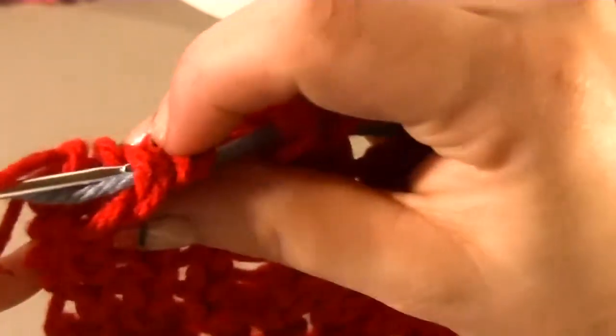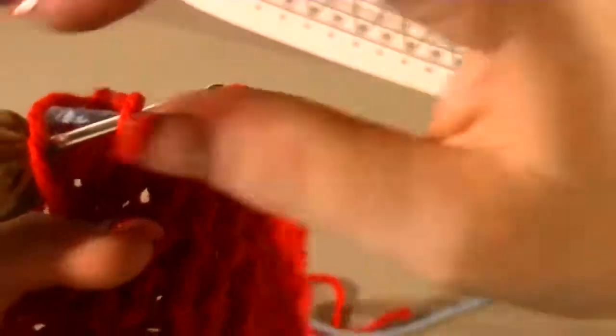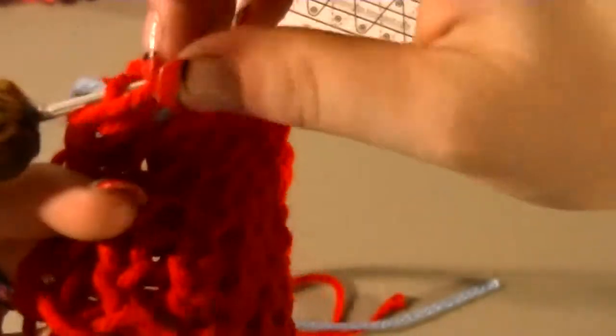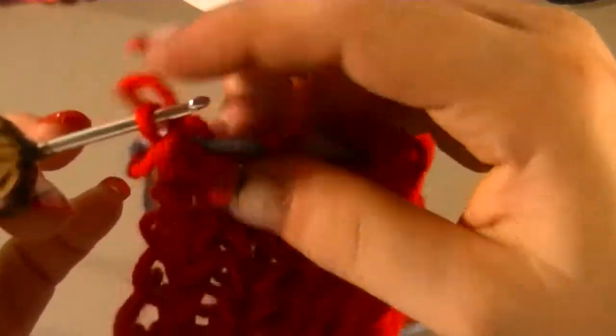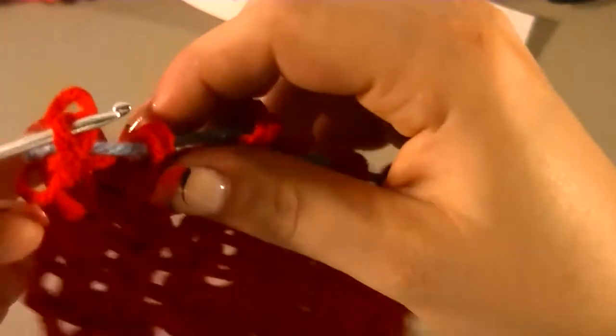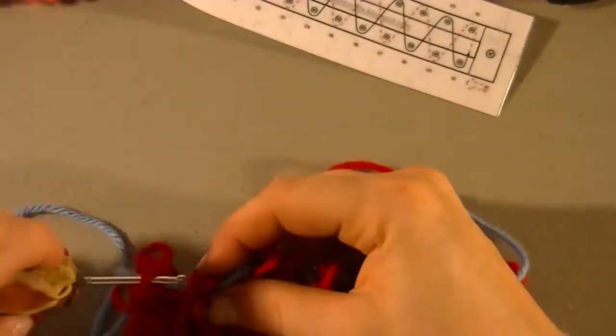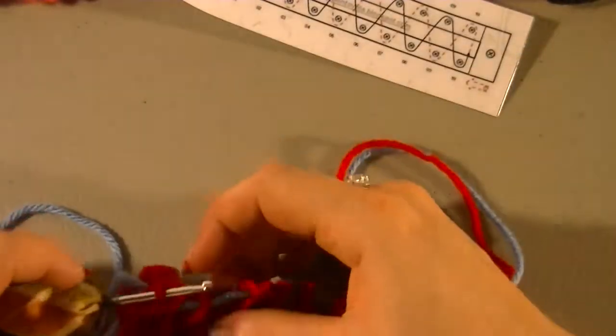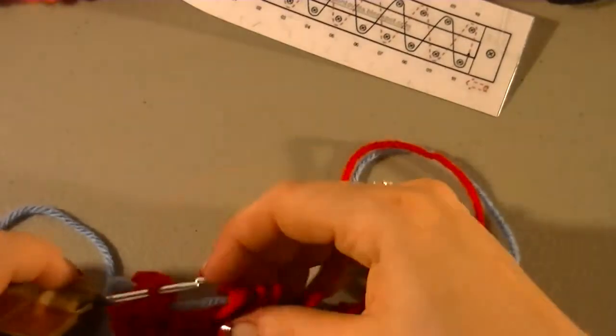It's not going to make a huge difference. You just pick up one of the loops above that blue string and pull it through the loop on the hook, and then you're going to pick up the next one and do the same. Hold it down here and you're going to do this until you get to the other end.